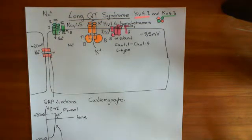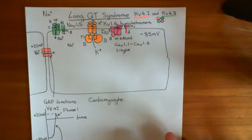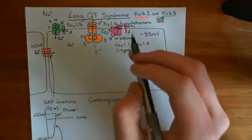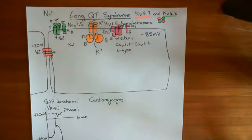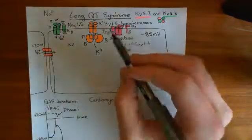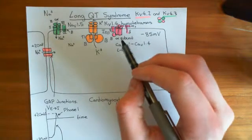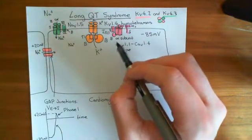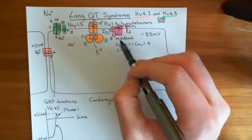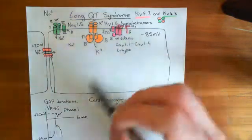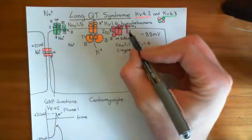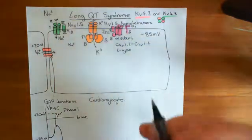Welcome back to this next video on Long QT Syndrome. To discuss the next phase of the action potential, which is the plateau phase, we have discussed the L-type voltage-gated calcium channel, but it isn't the only important channel. There are also the delayed rectifier potassium channels, because L-type voltage-gated calcium channels let calcium in, producing a depolarization. To get the plateau phase, we need a current out that matches the current in — no net change in electrical potential — and that current out is a potassium current.